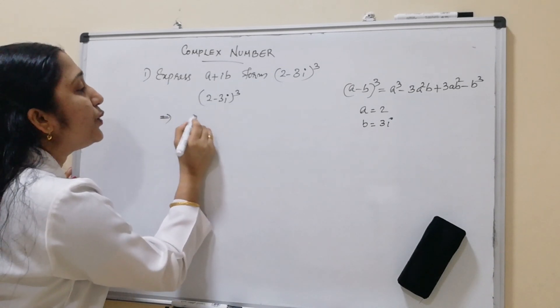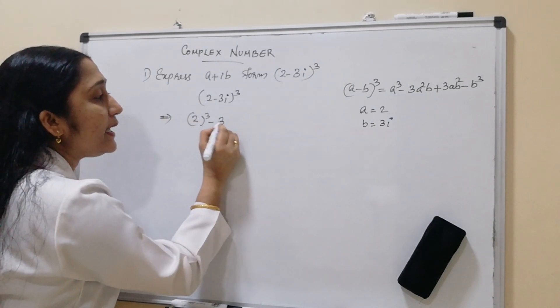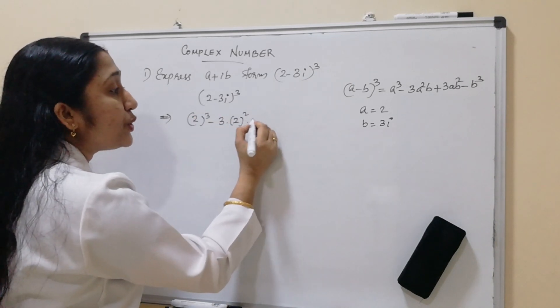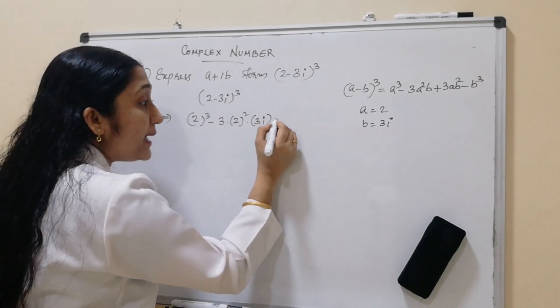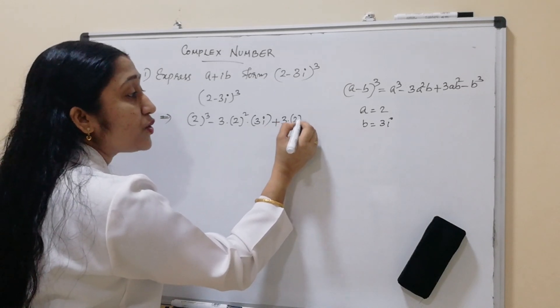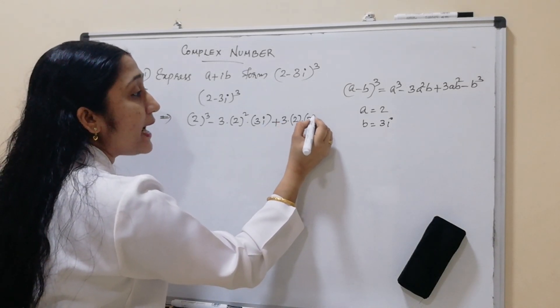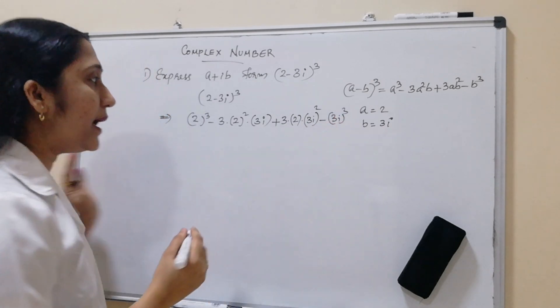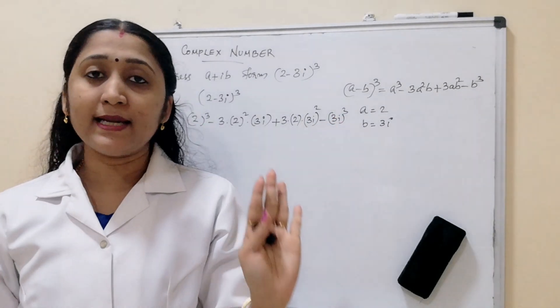That implies here, 2 cube minus 3 into a square means 2 square into b means 3i plus 3a is 2 into b square means 3i whole square minus 3i whole cube. This is the form of a minus b cube.